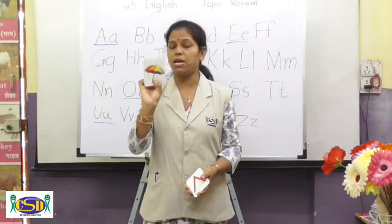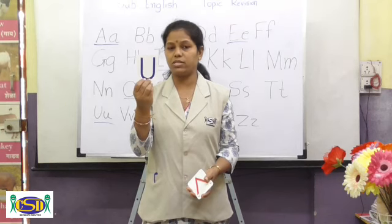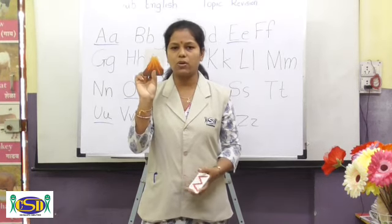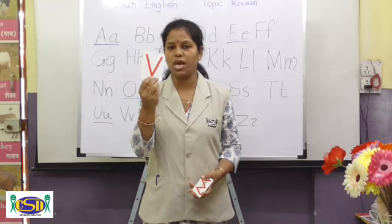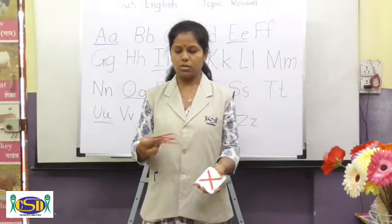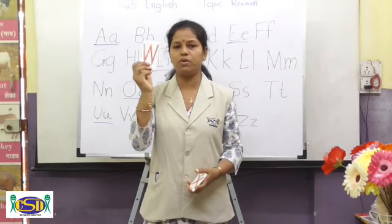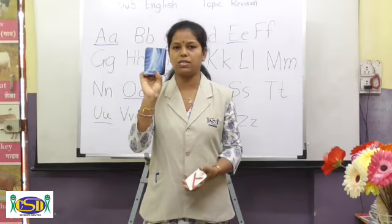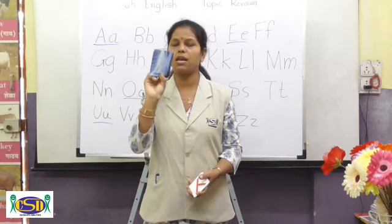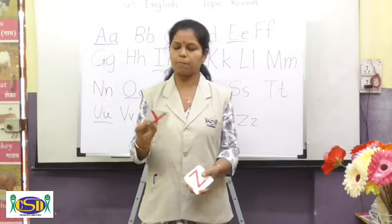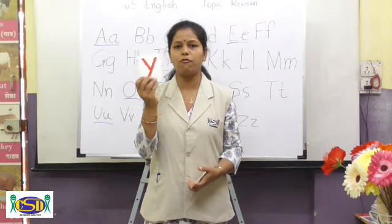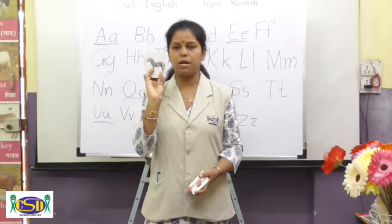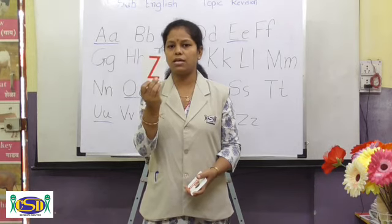Table. Table starts from T — T as in Table. Umbrella. Umbrella starts from U — U as in Umbrella. Volcano starts from which letter? V — V as in Volcano. Wool starts from W — W as in Wool. X-Ray. X-Ray starts from X — X as in X-Ray. Y starts from Y — Y as in Y. Zebra. Zebra starts from Z — Z as in Zebra.